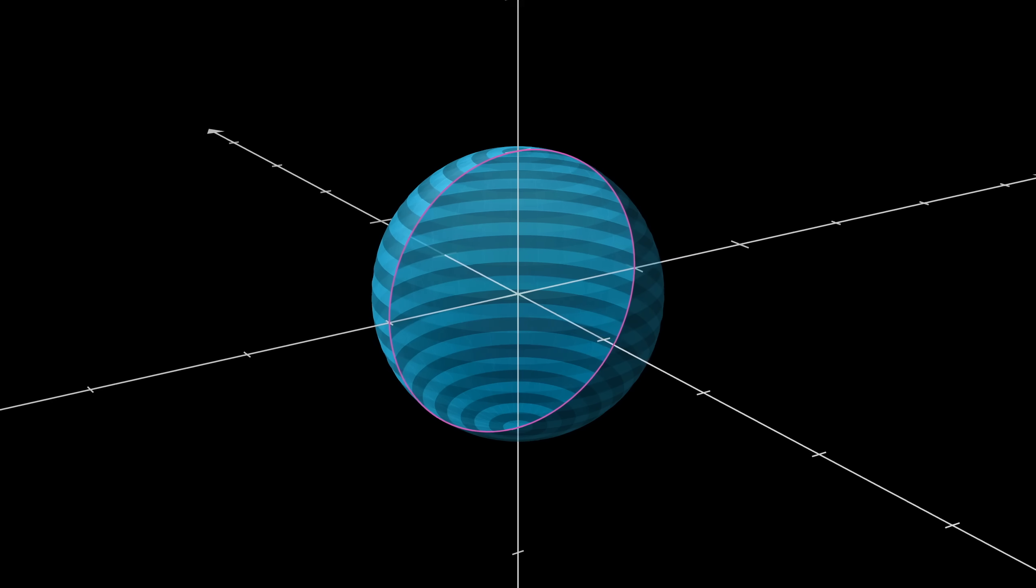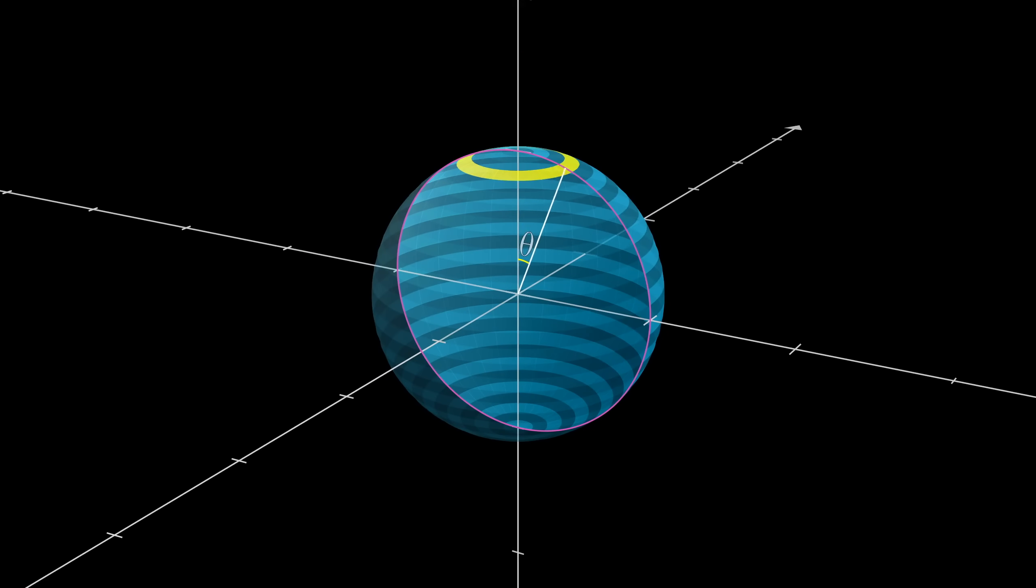Let's label each one of these rings based on the angle theta between a line from the sphere's center to that ring and the z-axis. So theta ranges from zero at the north pole all the way up to 180 degrees at the south pole, which is to say from zero to π radians.